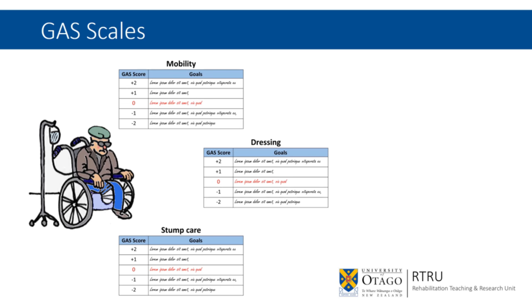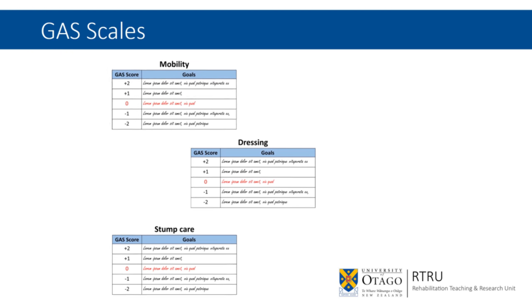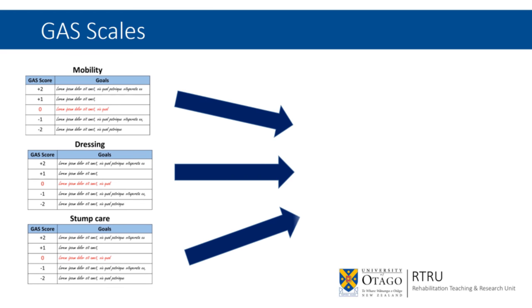One rehabilitation patient can have multiple goals, in which case at the end of the rehabilitation program, these GAS scores can be weighted and combined into a single T-score using this calculation.